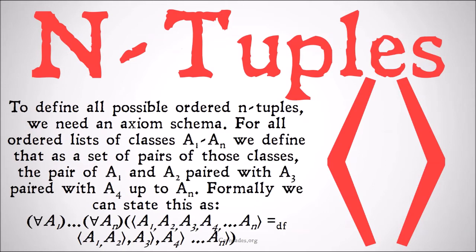So to define all possible n-tuples, we need a definition schema. For all ordered lists of classes a1 through an, we define that as a set of pairs of those classes — the pair of a1 and a2, paired with a3, paired with a4, up to an. Formally, we can state this as: for all a1 up to an, the ordered n-tuple a1, a2, a3, a4 up to an is equal to, by definition, the ordered pair a1, a2, and a3, and a4, etc., all the way up to an — each as a telescoping set of ordered pairs.